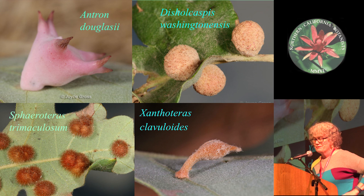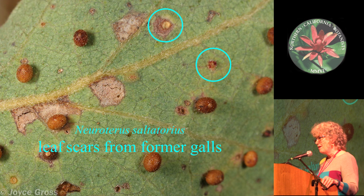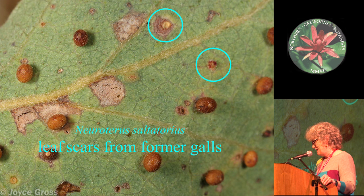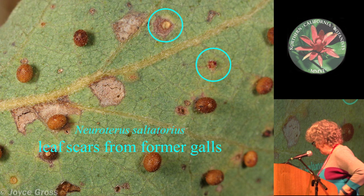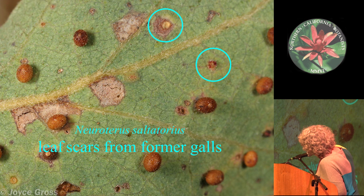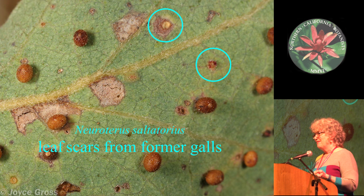Probably the most interesting, but also one of the tiniest of galls, is Neuroterus saltatorius, the leaf gall known as the California jumping gall. I've circled where they've actually fallen off. Each one of these has one single female wasp inside. What's happened is they've fallen on the ground, and they actually will jump up and down until the larva has started to pupate.